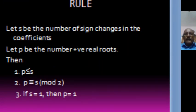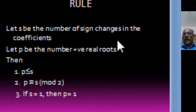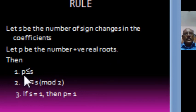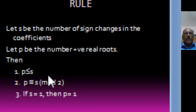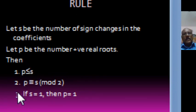So how to apply this rule for a problem. Suppose S is the number of sign changes in the coefficients. Let P be the number of positive real roots. Then the rule states that P is less than or equal to S. The number of positive real roots is always less than or equal to S. And there is a relationship between P and S — they are congruent modulo 2. P is congruent to S modulo 2.